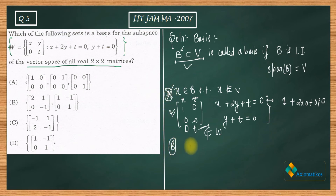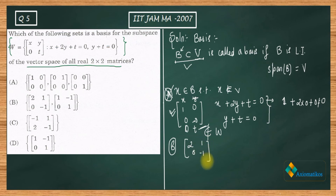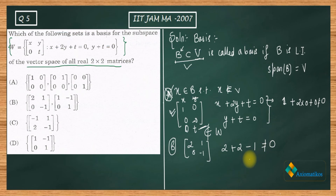Now checking Option B. Take the first element: [2,1;0,-1]. Check the condition: x + 2y + t = 2 + 2(1) + (-1), which is not equal to zero. Therefore Option B is also incorrect.